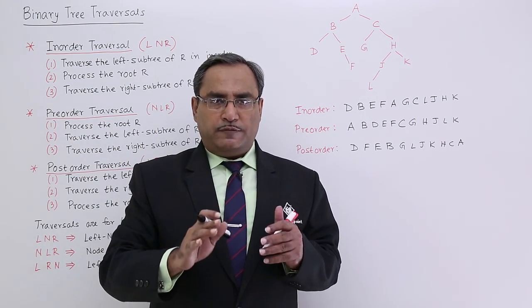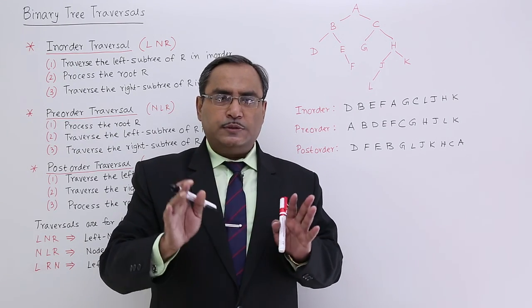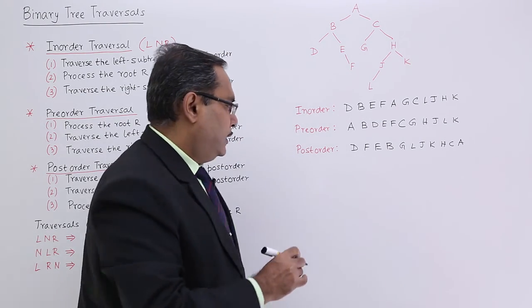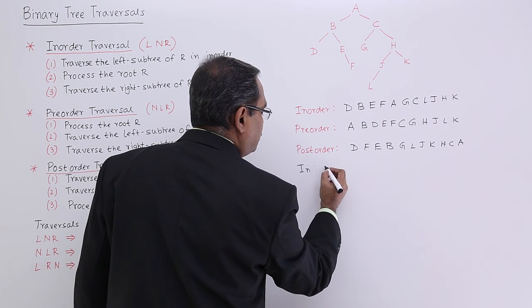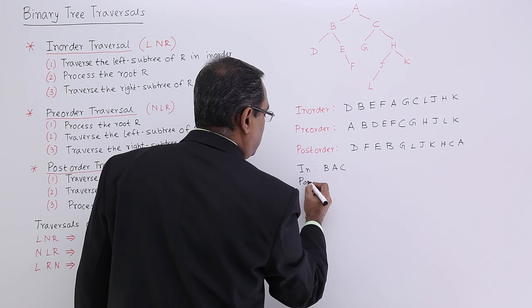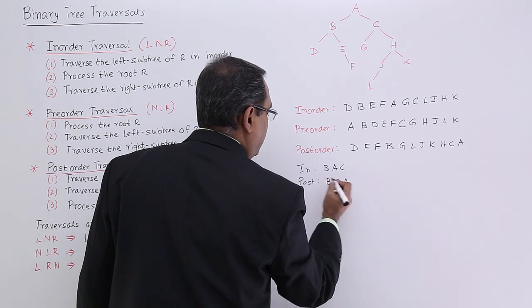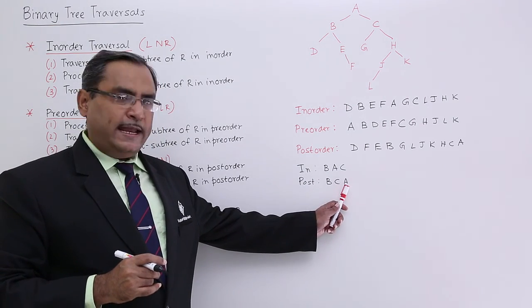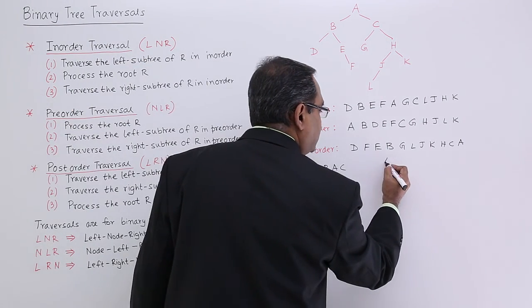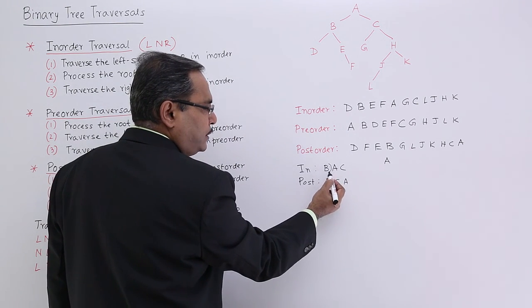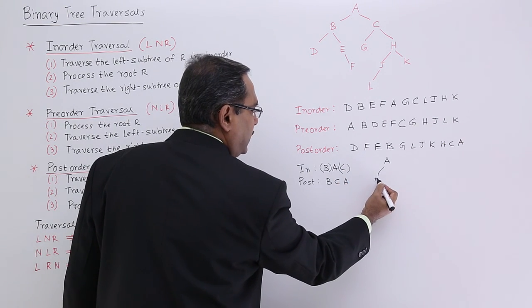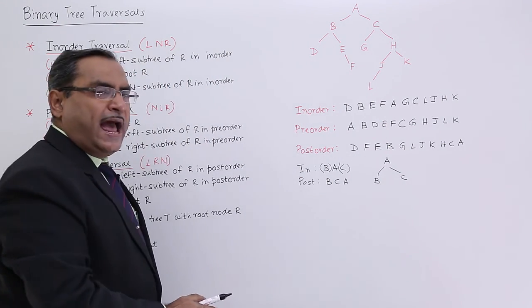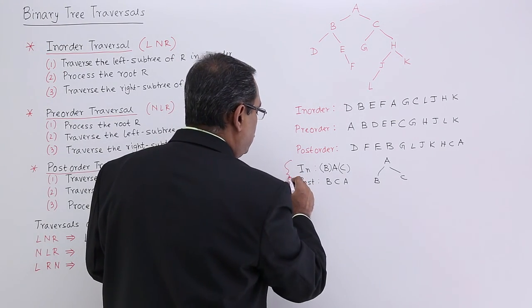From traversals we can form the tree back again. For example, given inorder traversal B, A, C and postorder traversal B, C, A — from postorder it is clear that A is the root. In inorder, everything before A is the left subtree and everything after A is the right subtree. So B is the left subtree and C is the right subtree. In this way, from inorder and postorder traversals I can form the tree without ambiguity.